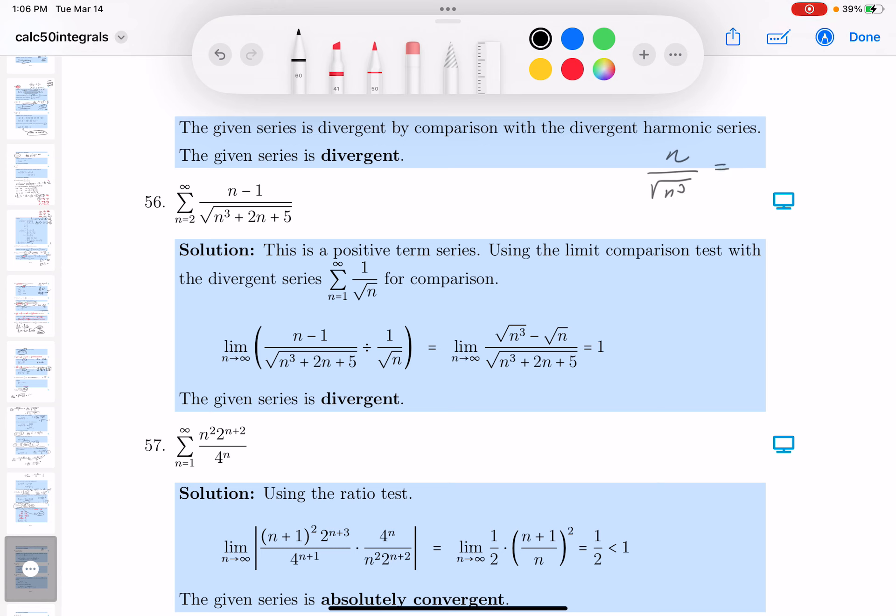I want to simplify that because I'm going to probably use that as a comparison. That's n, and this would be n to the 3 halves, which, if I simplify that further, is going to be 1 over the square root of n.